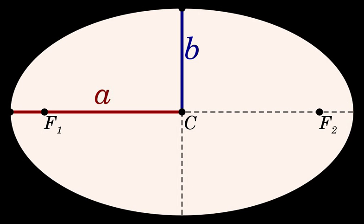The equation of an ellipse is: (x − h)² / a² + (y − k)² / b² = 1, where h is the center of the ellipse in Cartesian coordinates, in which an arbitrary point is given by (x, y).